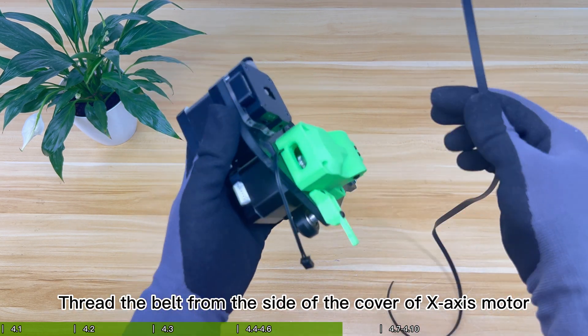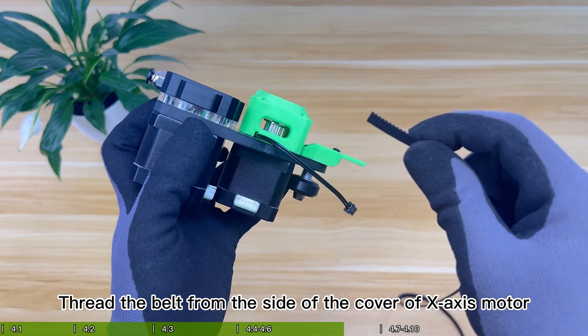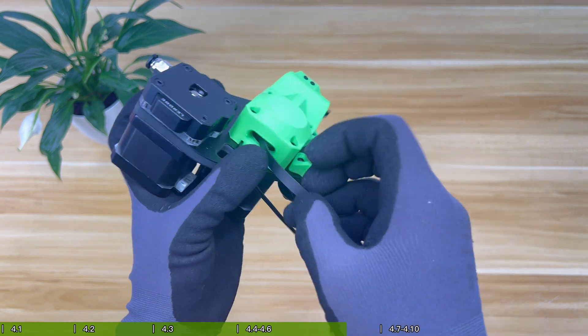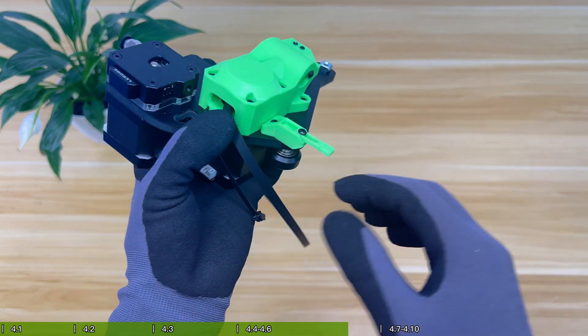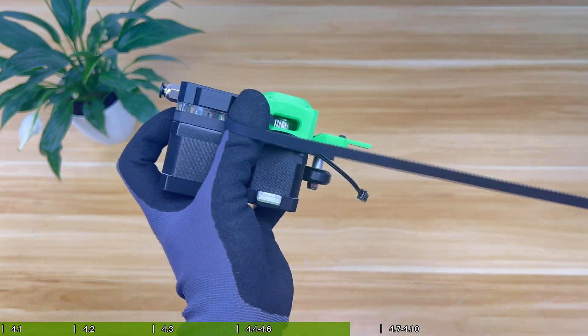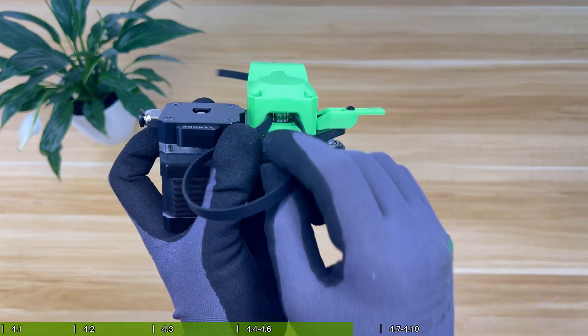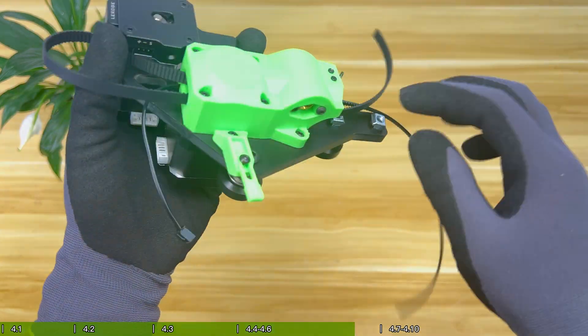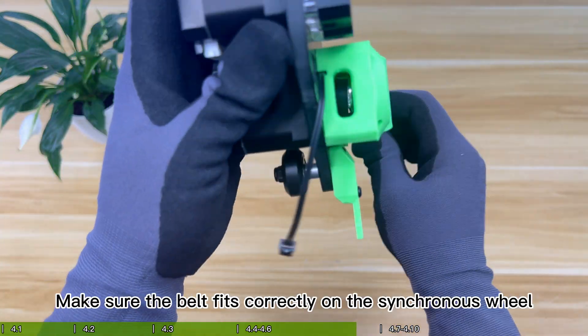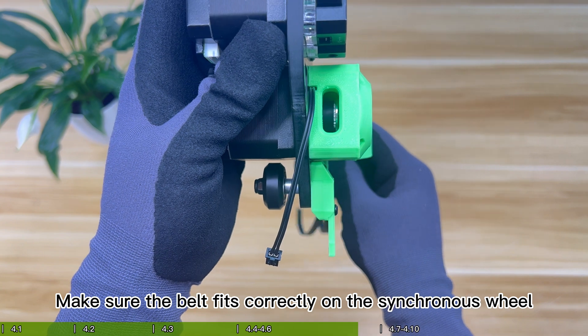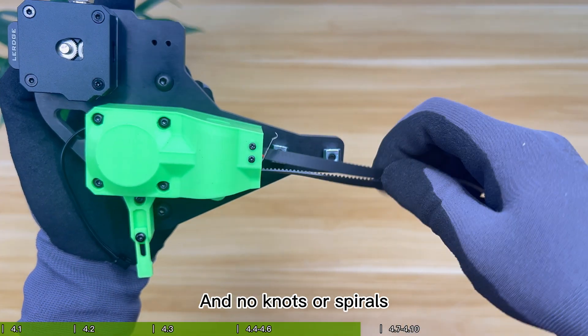Thread the belt from the side of the cover of X-axis motor. Make sure the belt fits correctly on the synchronous wheel and no knots or spirals.